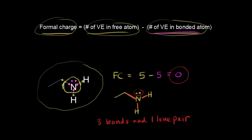Sometimes you don't want to draw in lone pairs of electrons, so you could just leave those off. If you draw the nitrogen with three bonds and you know the formal charge is zero, it's assumed you also know there's a lone pair of electrons on that nitrogen. This is just another way of representing the same molecule — leaving off the lone pair because you should know it's there.